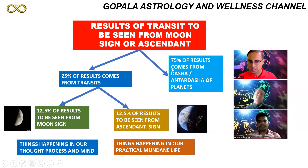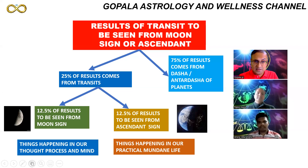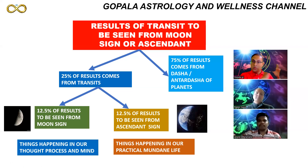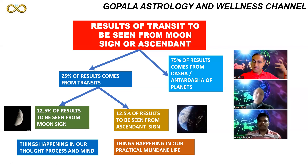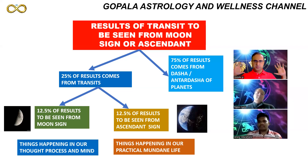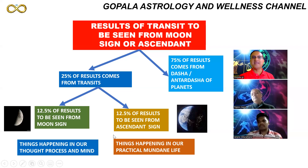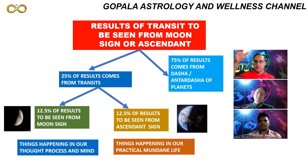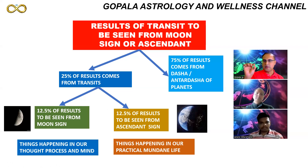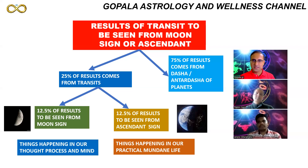Within that 25 percent of transit results, equal weightage of 50-50 must be given: 12.5 percent of results will come from the moon sign — your thought process — and 12.5 percent from what is physically happening to your body, based on the ascendant sign. If you have a positive mind you can drive your car safely; that is the moon sign. What is practically happening to you from the movement of slow planets through your ascendant accounts for the other 12.5 percent.